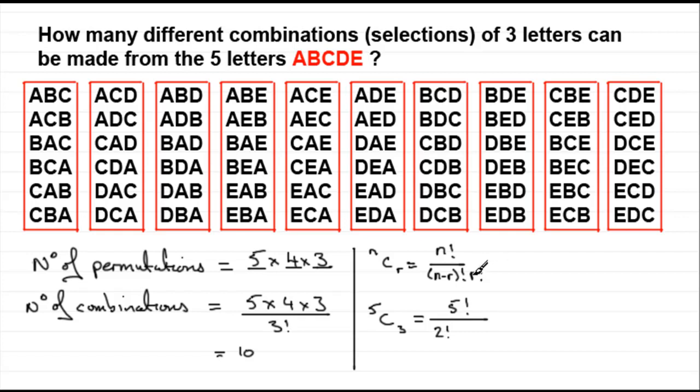And then we've got times r factorial, and the r here is 3, so that's 3 factorial. And if you work this out, you'll see that you'd have 5 times 4 times 3 times 2 times 1 for 5 factorial, all divided by 2 factorial, which is 2 times 1, and times another 3 factorial.